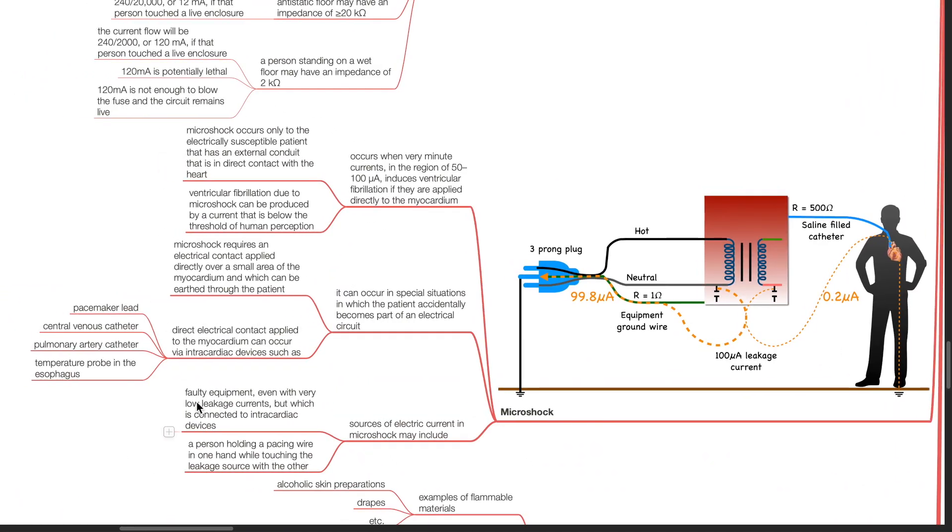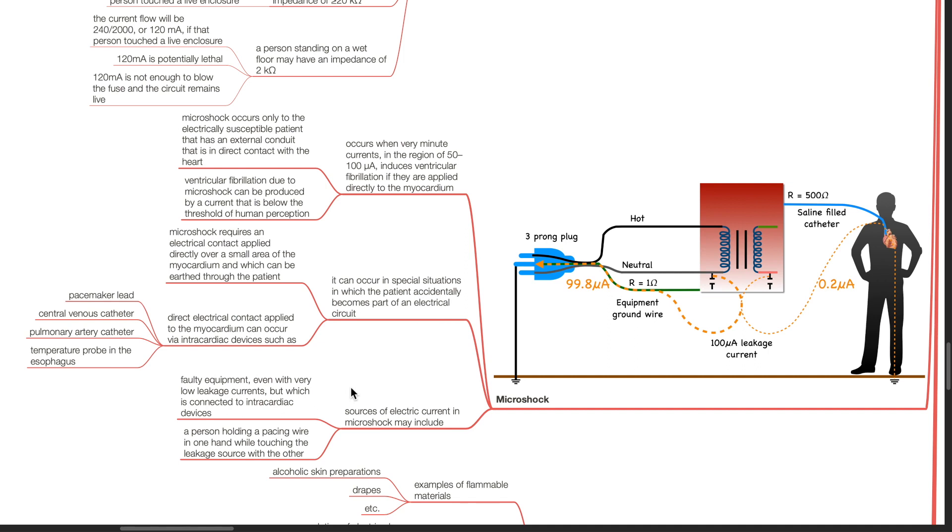Microshock occurs when very minute currents in the region of 50 to 100 microamps induce ventricular fibrillation if they are applied directly to the myocardium. Microshock occurs only to the electrically susceptible patient that has an external conduit that is in direct contact with the heart. VF due to microshock can be produced by a current that is below the threshold of human perception. It can occur in special situations in which the patient accidentally becomes part of an electrical circuit. Microshock requires an electrical contact applied directly over a small area of the myocardium which can be earthed through the patient.